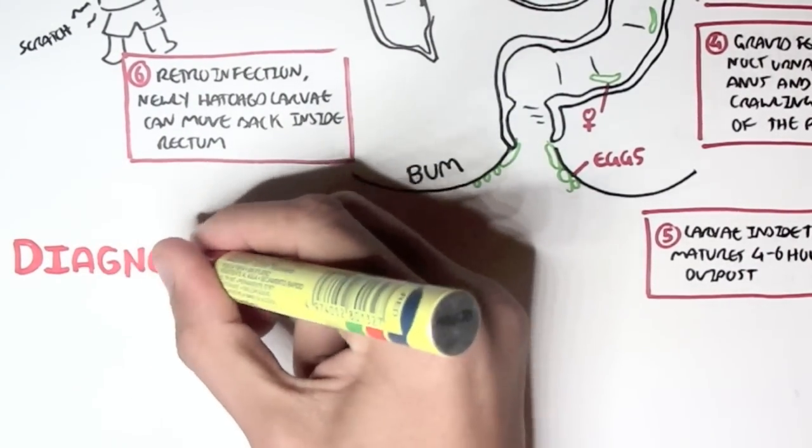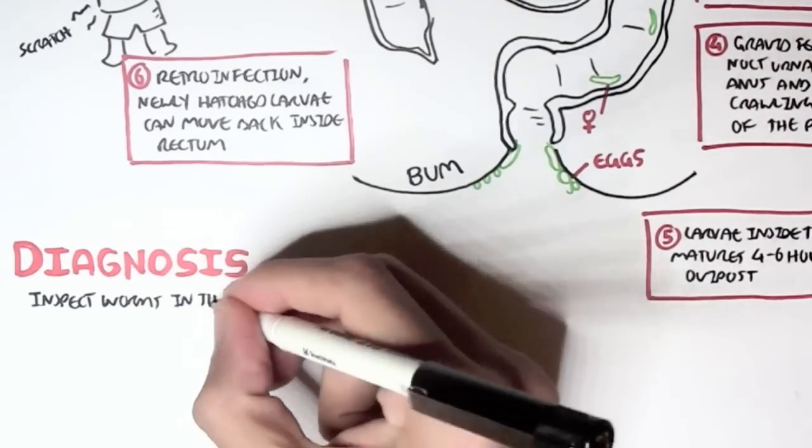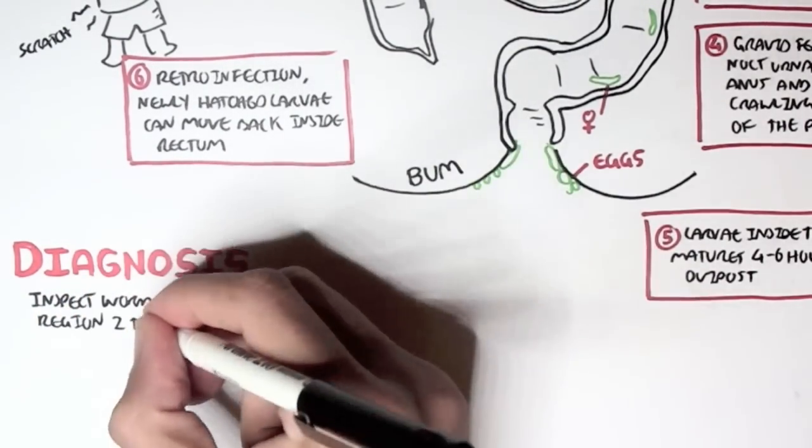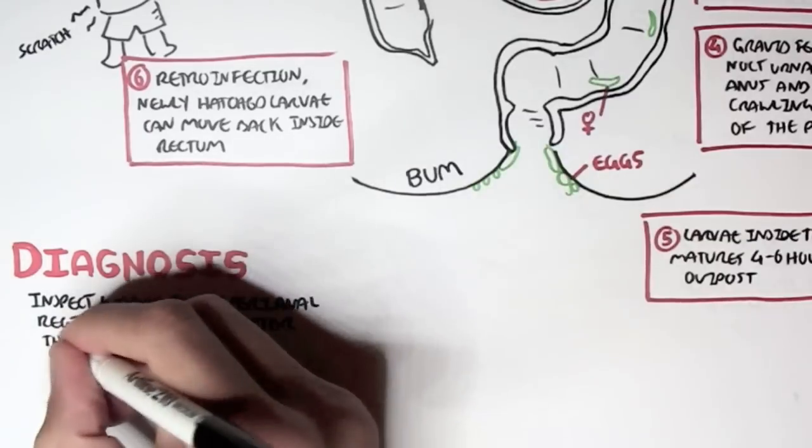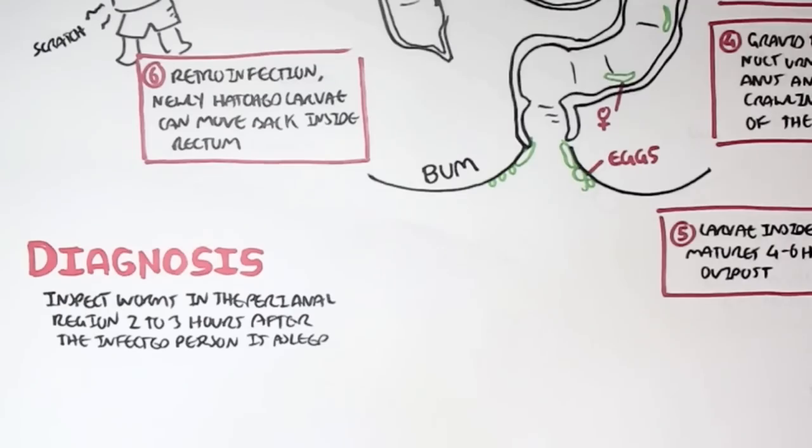To diagnose pinworms, we can inspect the worms in a perianal area, the bum, basically 2 to 3 hours after the infected person is asleep. Because you can see most likely the worm crawling out of the bum and laying eggs there, 2 to 3 hours after the person is asleep.